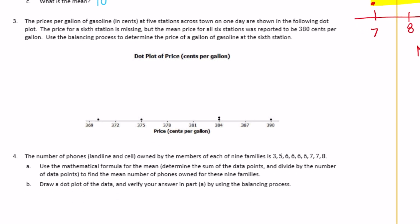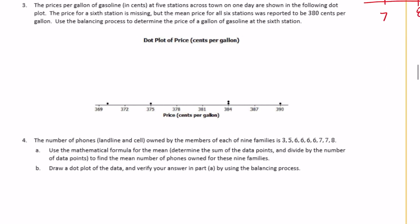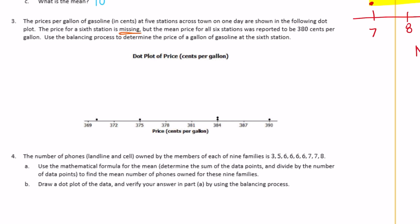Number three: the prices per gallon of gasoline in cents at five stations across town are shown on a dot plot. The price for a sixth station is missing, but the mean price for all six stations was reported to be 380 cents per gallon. Use the balancing process to determine the price at the sixth station. We know the mean is at 380, so the distances on either side must be equal — let's find the known distances first.